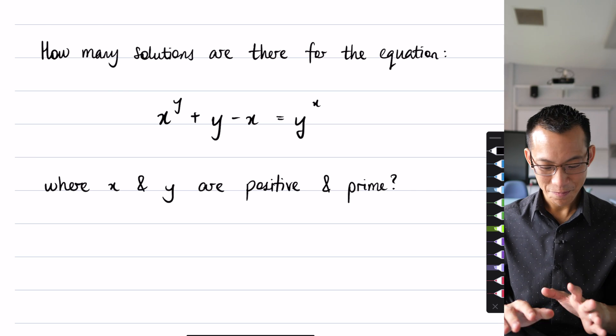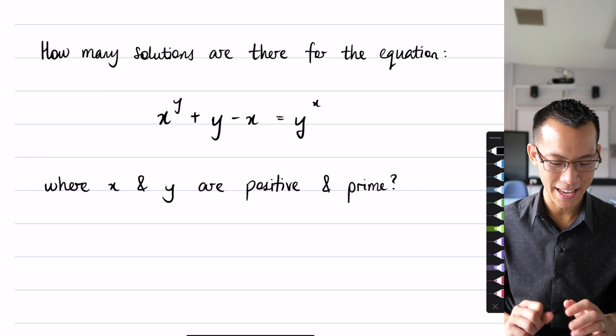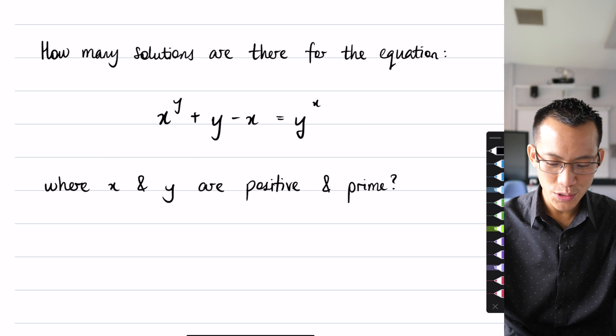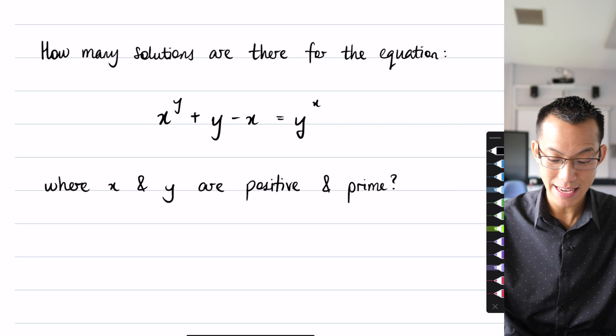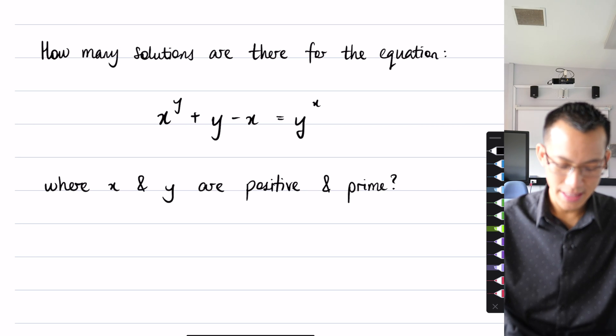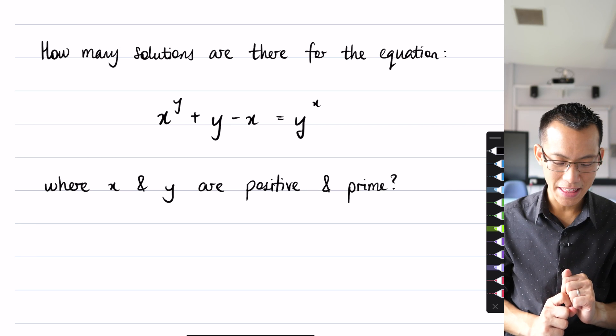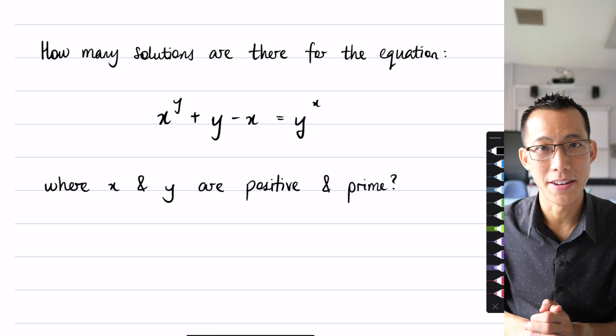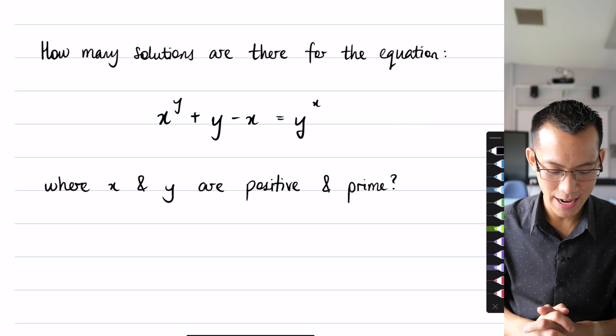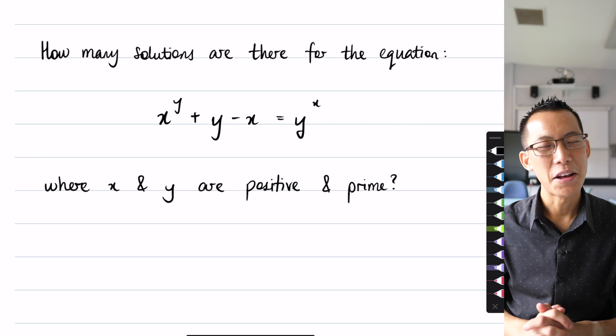So let's have a look at the problem together. It says how many solutions are there for the equation x to the y plus y minus x equals y to the x, on the condition that x and y are positive and prime numbers. How do we go about solving this?